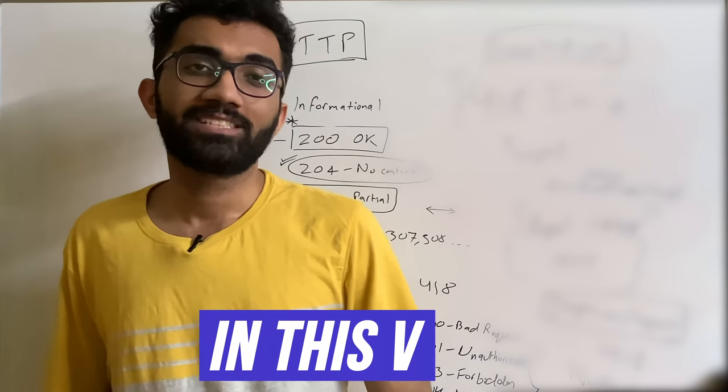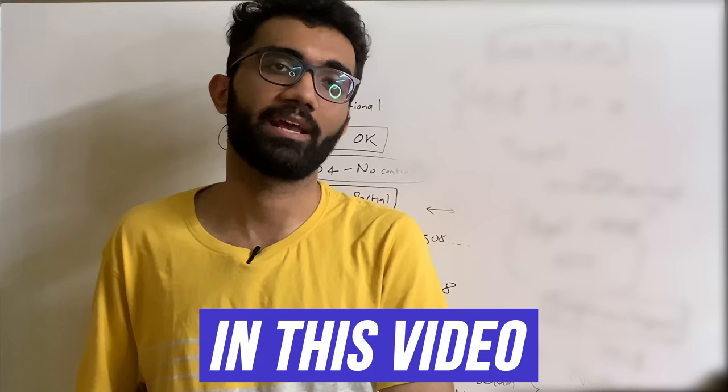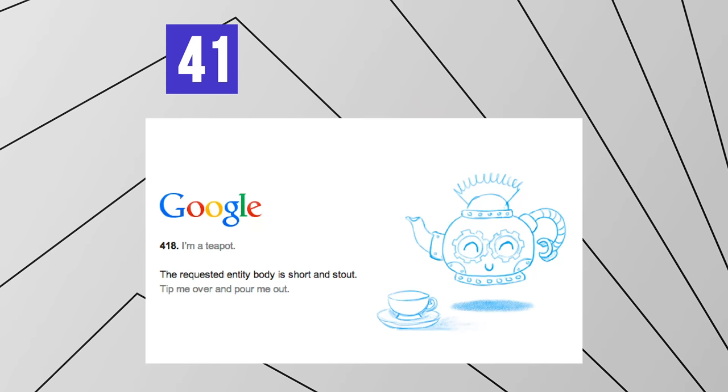On a more serious note, because this has been part of the HTTP protocol unofficially, it is possible that a lot of services might break if this is removed from the spec. There's a status code in HTTP which is 418 - 'I'm a teapot.' Why does that exist?